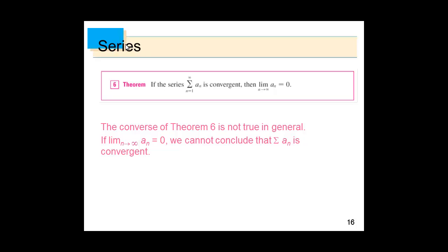In exams, people often misuse this theorem. They say: 'the limit of a_n is 0, therefore the series is convergent.' That is absolutely wrong. The statement is: if the series is convergent, then the limit of a_n is 0. It does not work the other way. However, we can use the contrapositive.